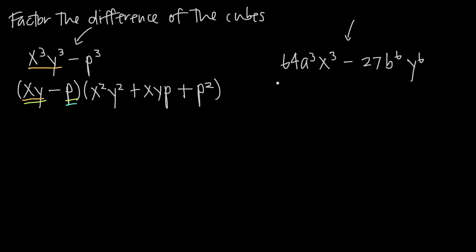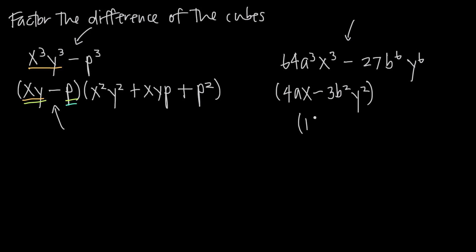We're going to factor the same way as before. We take the cube root of each value: the cube root of 64 is 4, the cube root of a cubed is a, the cube root of x cubed is x. Then we always subtract — that's part of our pattern. The cube root of 27 is 3, the cube root of b to the sixth is b squared, and the cube root of y to the sixth is y squared. So we've factored out our binomial term. Now we multiply by the trinomial. We need to figure out what to multiply by 4ax to get back to 64a cubed x cubed: 64 divided by 4 is 16, we multiply a by a squared to get a cubed, and x by x squared to get x cubed. So the first trinomial term is 16a squared x squared.